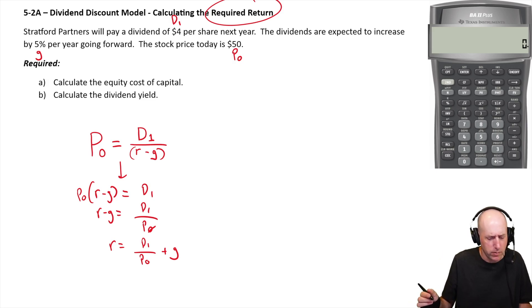So R equals D one over P zero plus G. We've got D one, we got P zero and we got G, we can solve. So let's solve for R. D one is four divided by P zero, which is 50. I said 50, I wrote 40. I don't know what happened there.